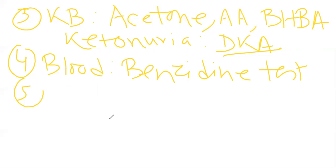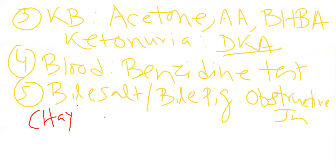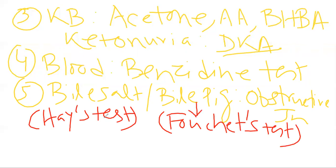Next is the bile salt and the bile pigment. Both bile salts and bile pigment can be seen in case of obstructive jaundice due to common bile duct obstruction. How can you detect bile salt in the urine? The test is known as the Hay's test — by the Hay's test you can detect bile salt in the urine. And presence of bile pigment can be detected by the Fouchet's test. So Fouchet's test is the procedure by which you can detect bile pigment in the urine.